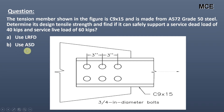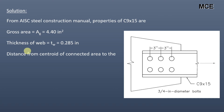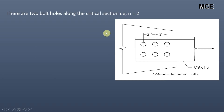From the AISC Steel Construction Manual, the properties of C9×15 are: gross area of the channel section equals 4.40 in², thickness of web equals 0.285 inch, and distance from centroid of connected area to the plane of the connection is 0.586 inch. The diameter of the bolt is given as 3/4 inch, so the diameter of the bolt hole equals bolt diameter plus 1/8, which equals 7/8 inch. There are two bolt holes along the critical section.